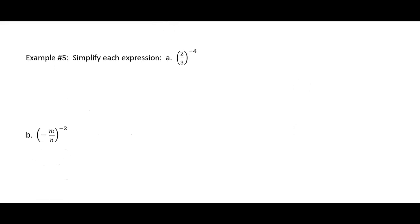Now they give us some examples. It says simplify each expression. I like to take care of the negative exponents first, so I'm going to use that rule and flip it and make it 3 over 2 to the fourth power. And then I'm gonna make that 3